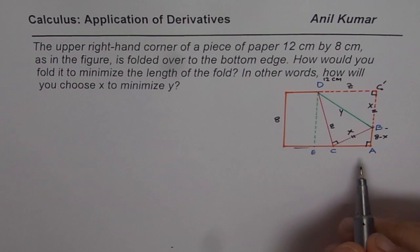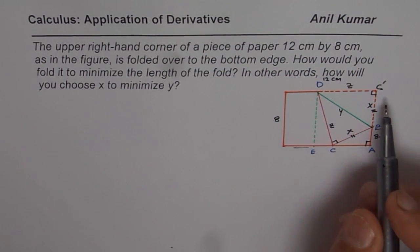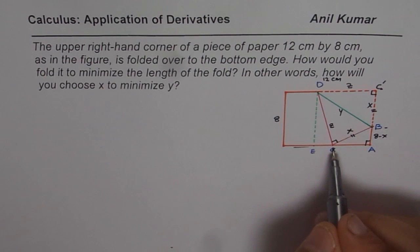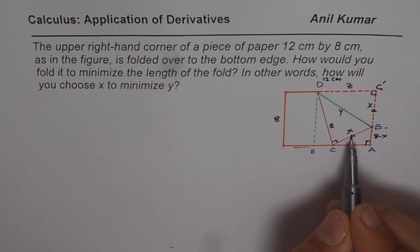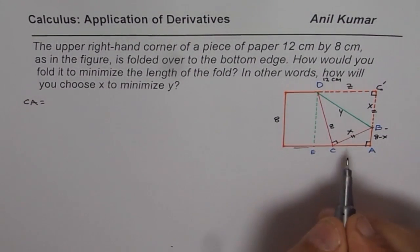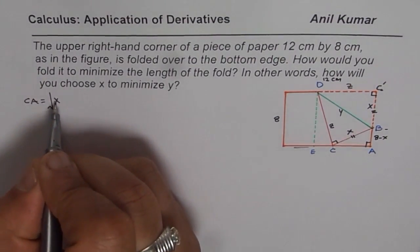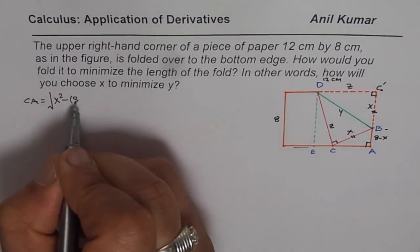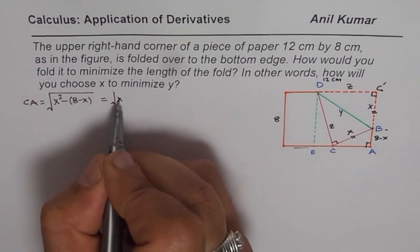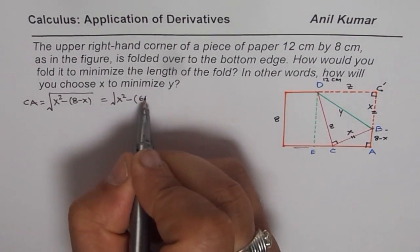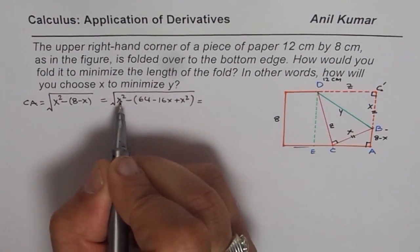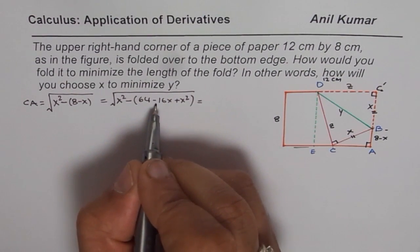In the first step, what we will try to do is find the length CA. Let us assume that C'B is X, then BA will be 8 minus X since this width is 8. We can use the Pythagorean theorem — the hypotenuse is X and one of the legs is 8 minus X. So CA is the square root of X squared minus (8 minus X) squared. We get X squared minus (64 minus 16X plus X squared), and X squared minus X squared is 0, leaving us with 64 minus 16X.